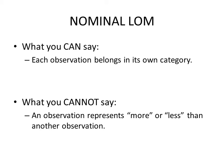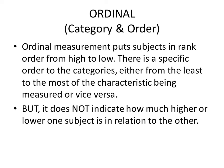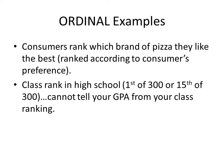The second level of measurement is ordinal. Ordinal uses categories and order — subjects are ranked from high to low. There is a specific order, either least to most or most to least of the characteristic being measured, but it does not indicate how much higher or lower one subject is relative to another. For example, class rank in high school: you could be first or 15th of 300, but that doesn't tell us your GPA.